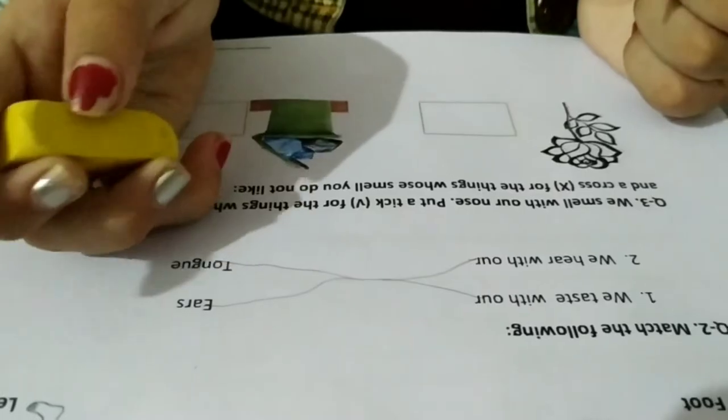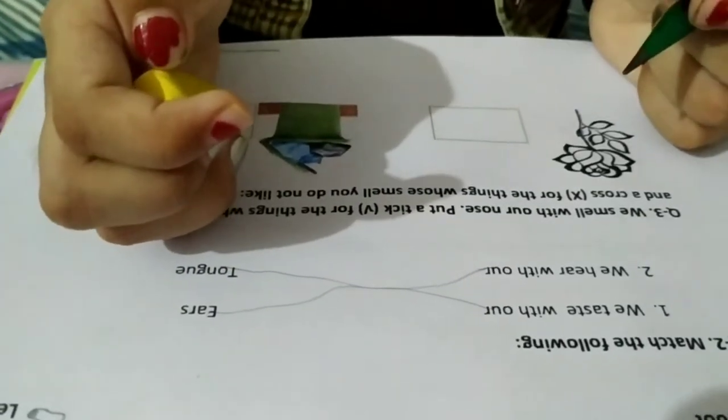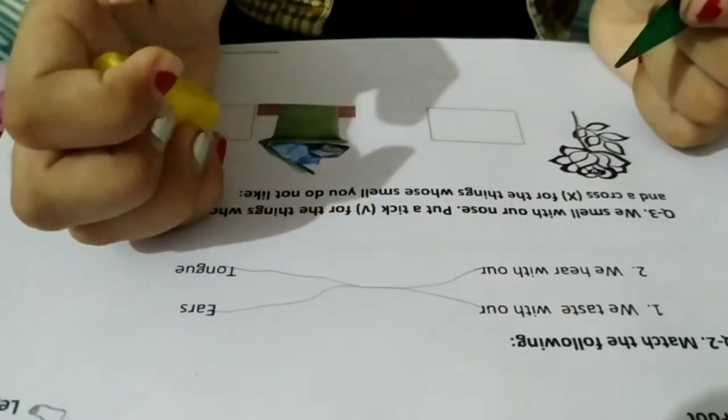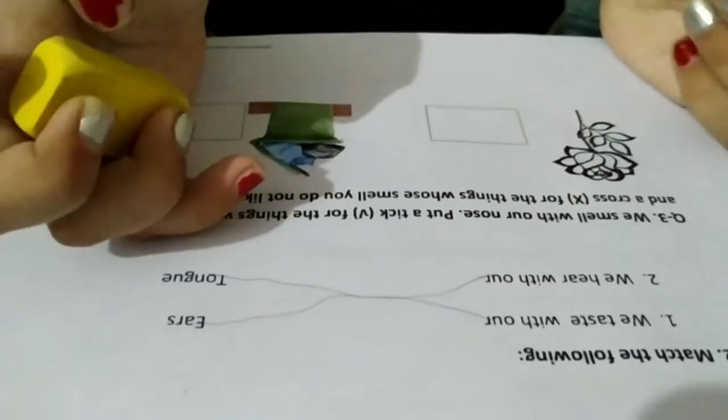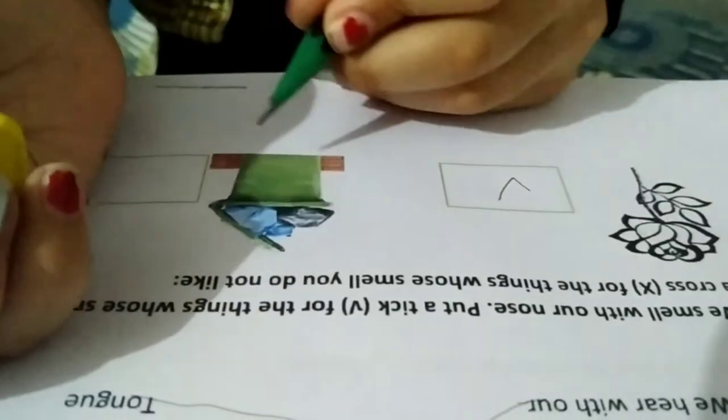Put a tick for the things whose smell you like and a cross for the things whose smell you do not like. Rose, tick. Cover.